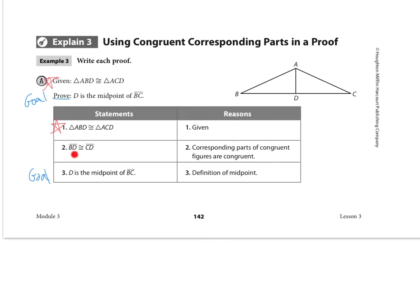So if BD is congruent to CD, then actually let's go ahead and mark that on the diagram. Remember, we use tick marks on segments to prove or to mark and show that they are the same length. So they're congruent pieces there.